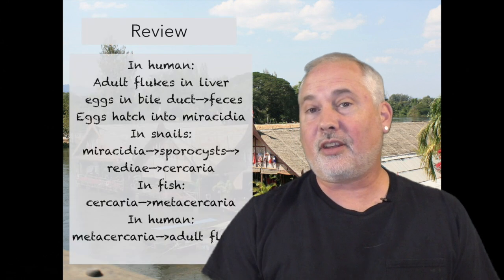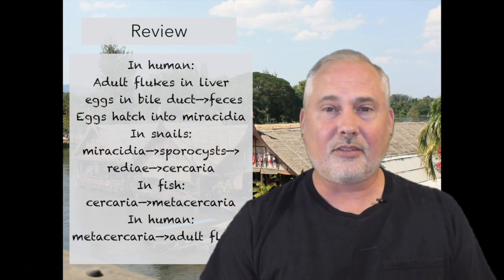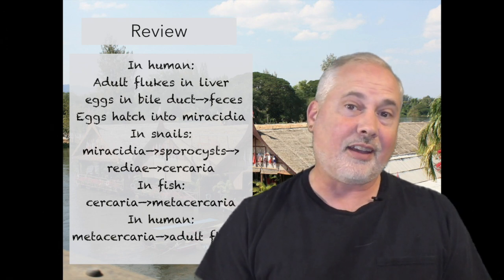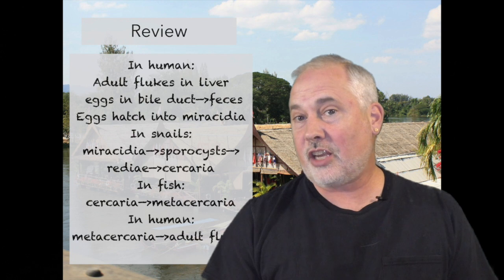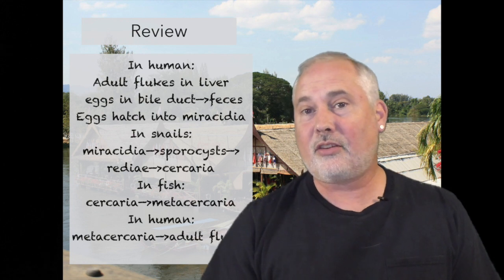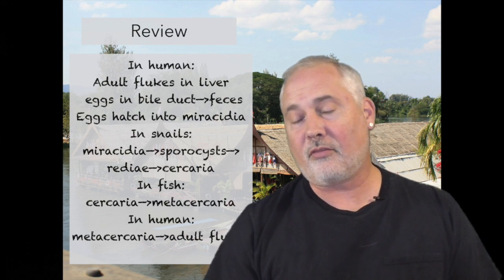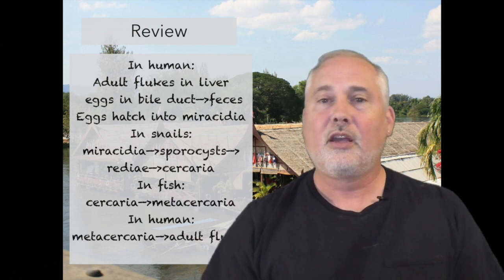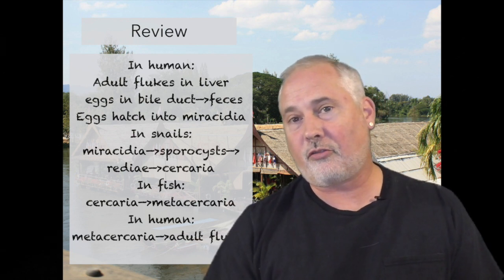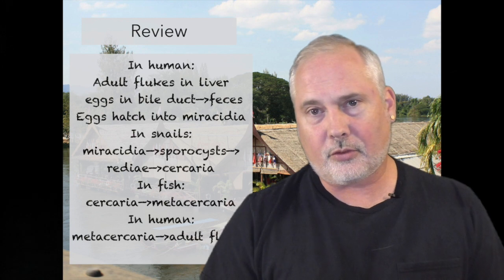In summary: adult liver flukes in the human liver lay eggs in the bile ducts that get passed out in feces. In fresh water, these eggs can hatch into Miracidia, which can then infect a snail. In the snail, they will change stages three times — first into Sporocysts, then into Redia, then into Cercaria, which leave the snail. Cercaria can then find a fish and either live on the scales or burrow into the fish's muscle and form a Metacercaria. The Metacercaria are what a human eats in raw or undercooked fish, which will then hatch in the small intestine to form new adult liver flukes.